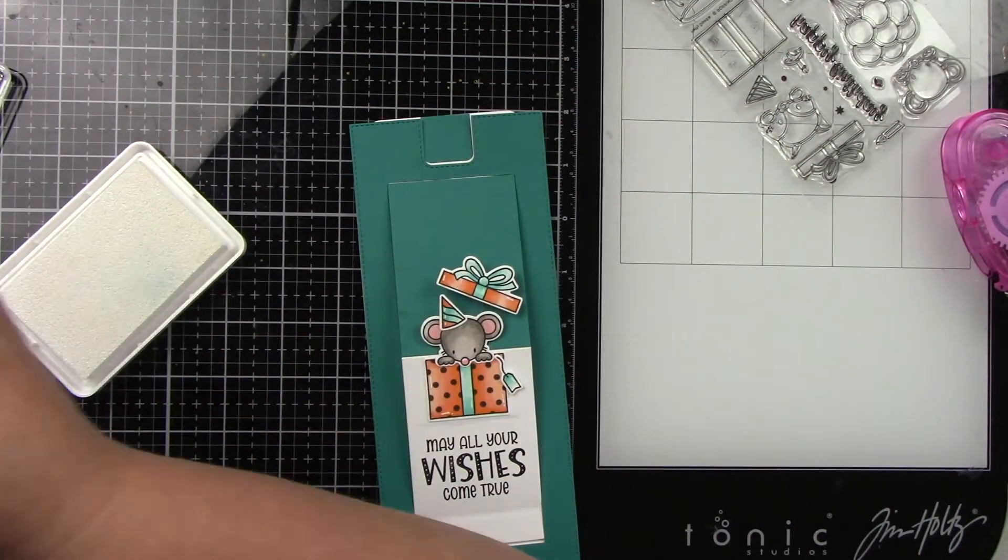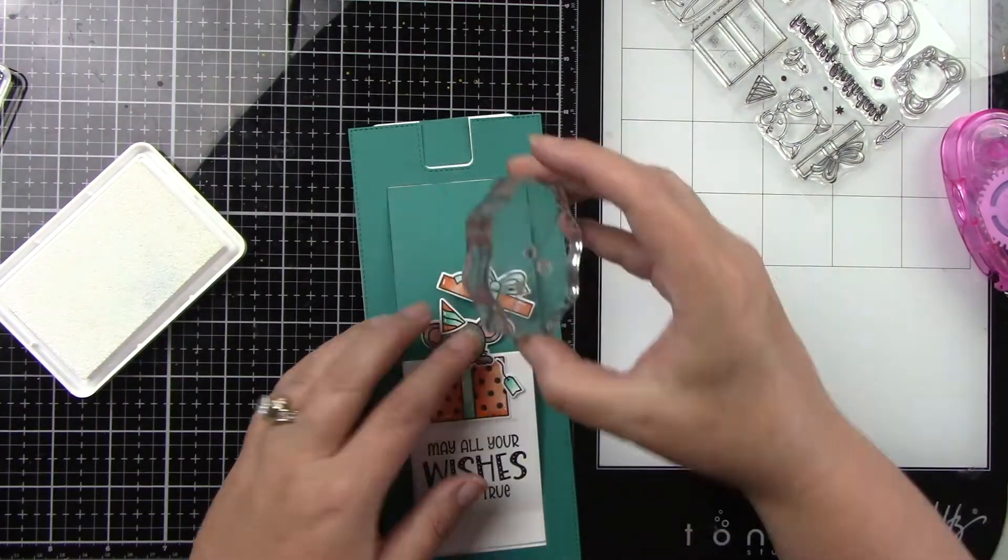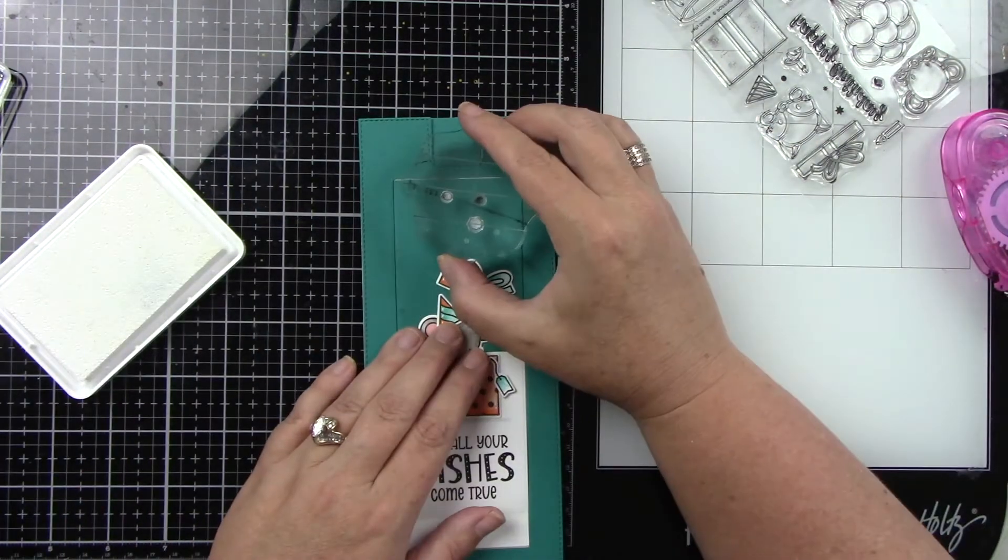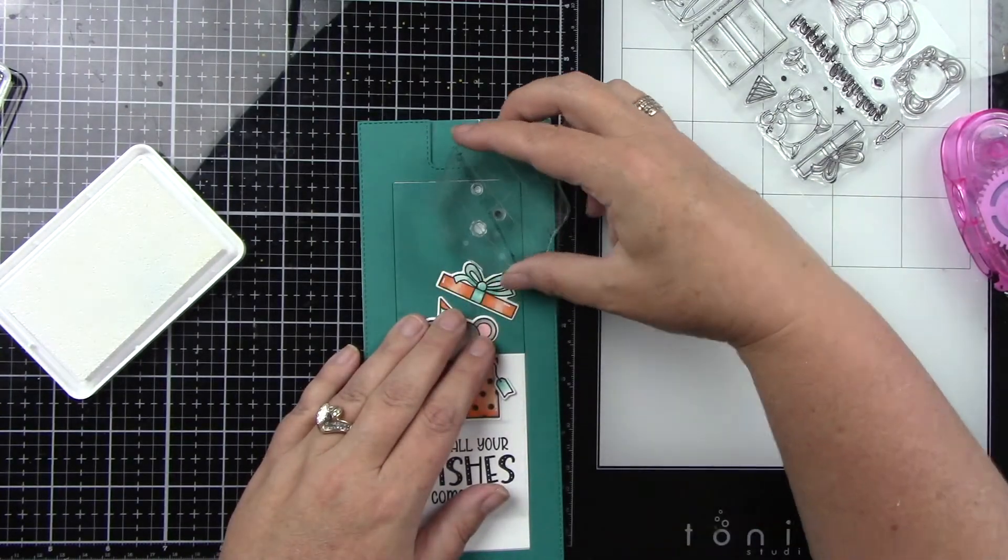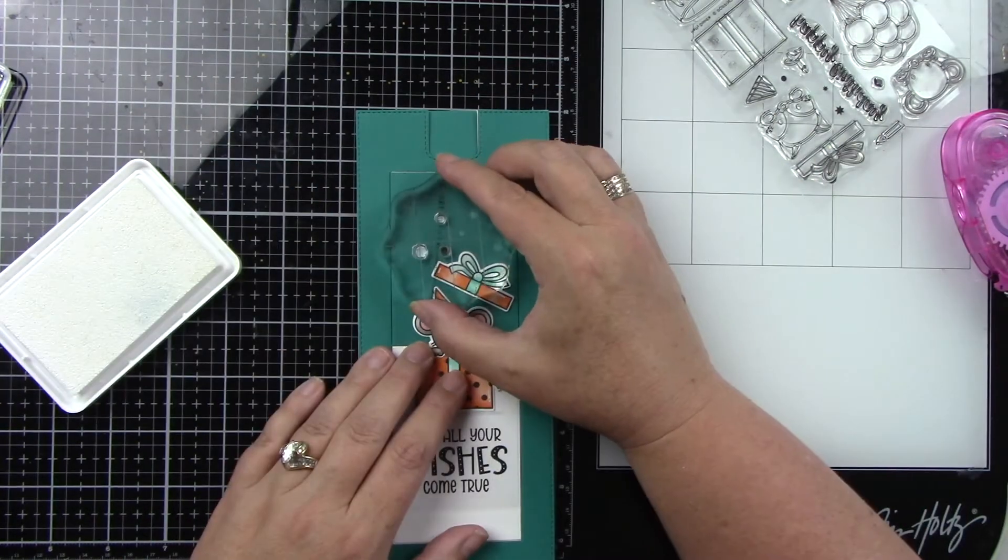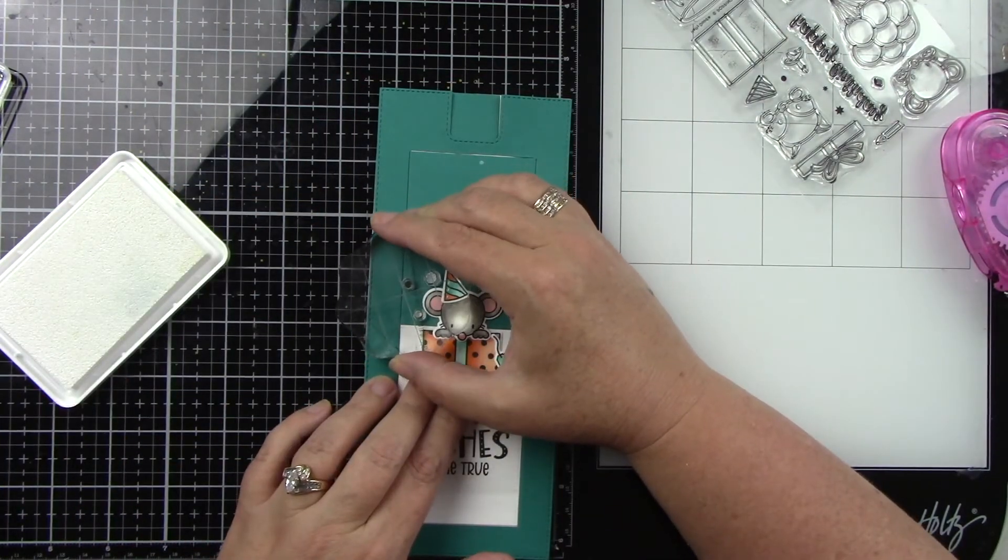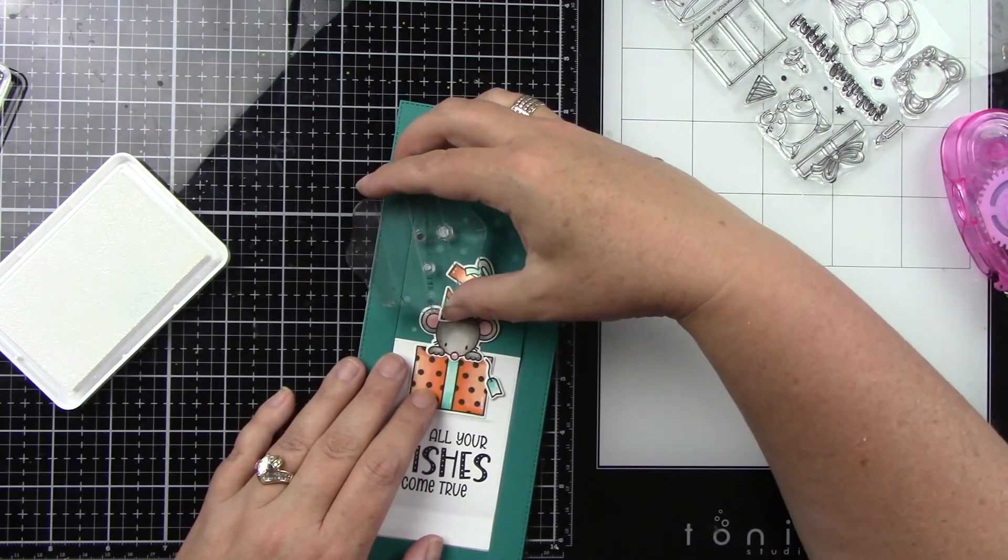In the Popping By stamp set, they have little confetti pieces. I'm going to come in with Hero Arts white pigment ink and add that around the little mouse, almost like it's confetti flying out when he pops out of the box, which I think is so darling.